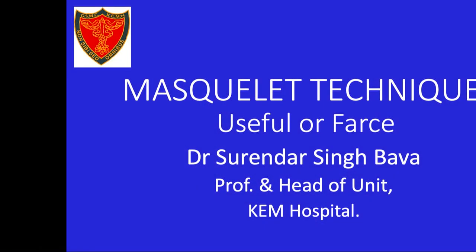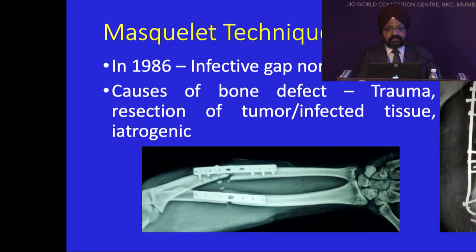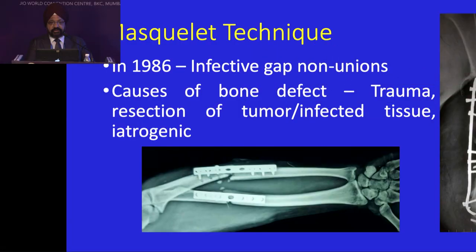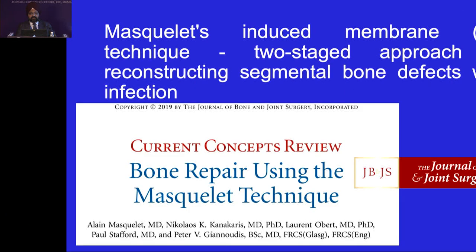Thank you Dr. Kaye. Good afternoon everybody. I am going to speak about Masquelet technique, whether it is useful or ours. First, let us see what is Masquelet technique. Masquelet in 1986 came out with treatment of infective gap nonunions. The gap was created basically due to trauma, resection of tumour, infected tissues, or iatrogenics. So he introduced a two-stage approach, basically called induced membrane technique for reconstructing segmental bone defects with infection.